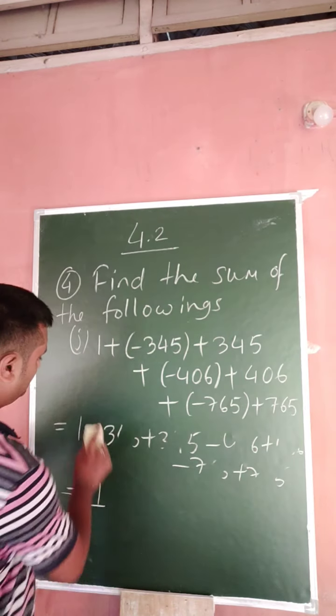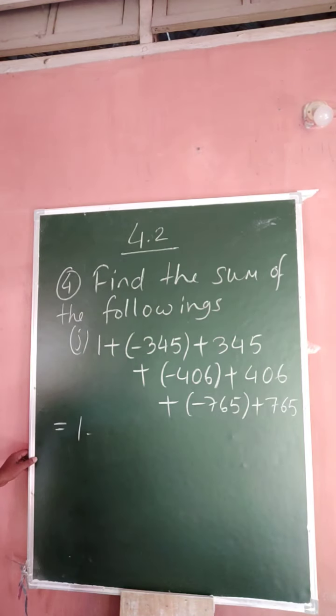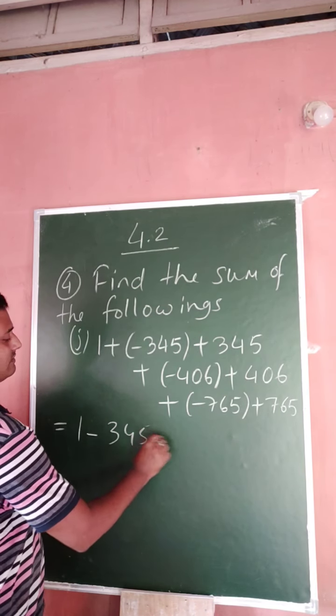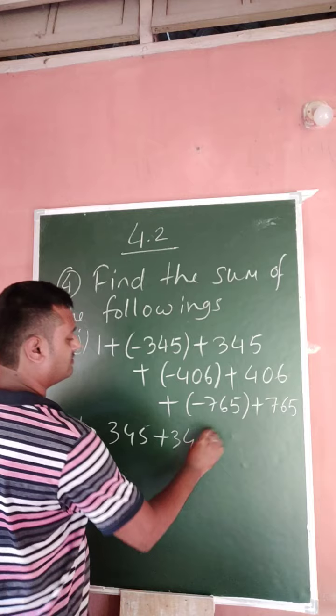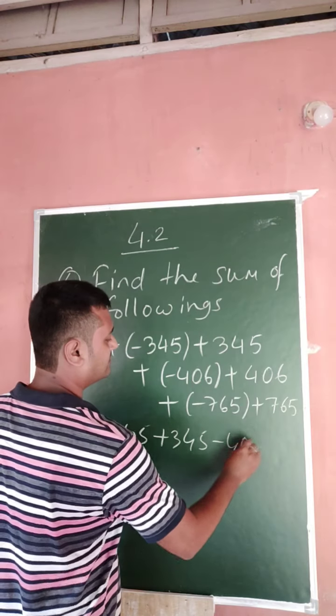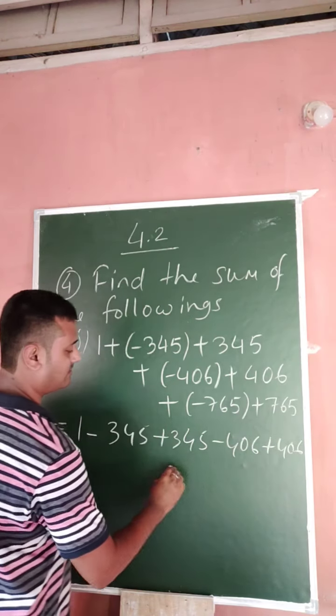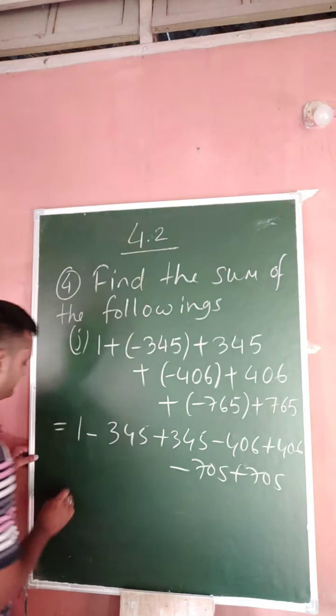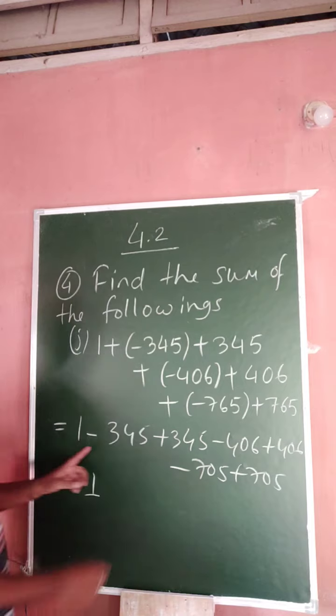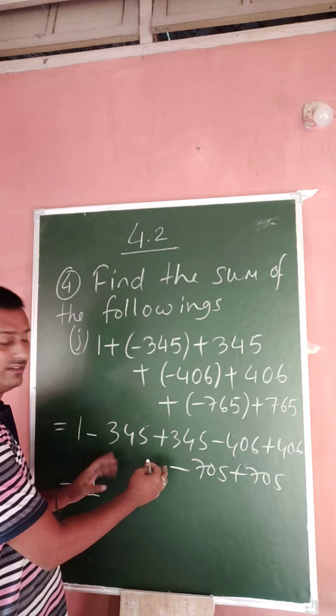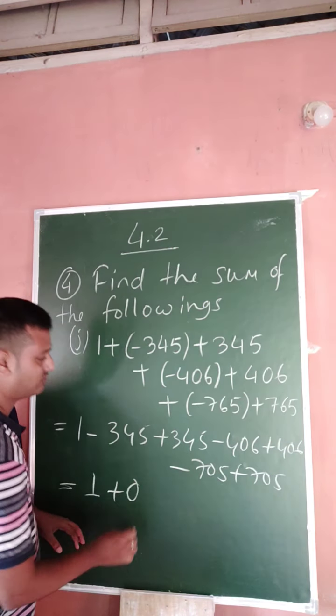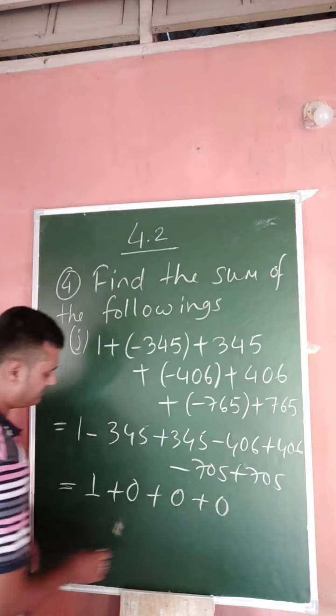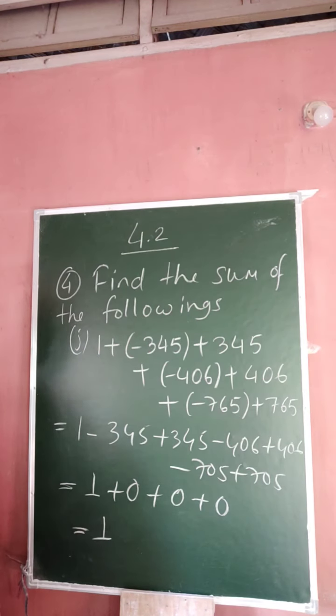I am just showing this: 1 minus 345 plus 345 minus 406 plus 406 minus 765 plus 765. So 1 minus 345 plus 345, that means plus 0, 0, 0. That means 1. In both ways you can solve. The previous one is better, you just cancel them.